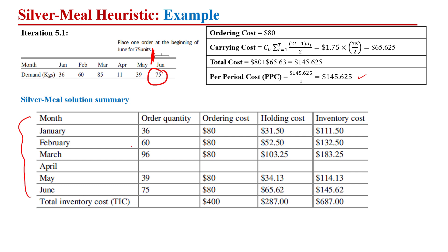This is the summary of the solution according to Silver Meal heuristics. To meet January's demand, place an order of 36 at the start of January. To meet February's demand, place an order of 60 at the start of February. To meet March and April's demand, place an order at the start of March equal to the combined March and April demand. To meet May's demand, order at the start of May; and to meet June's demand, order 75 at the start of June. I hope you got the idea of how to solve the dynamic lot sizing problem using Silver Meal heuristics. Thank you.